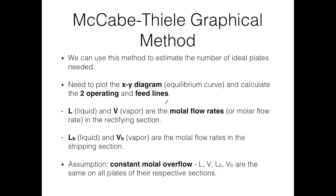A very popular method to determine the ideal or theoretical number of plates in a distillation column is the McCabe-Thiele graphical method. It is graphical because we use a graph to determine the number of plates. In this method, we plot the XY diagram — the equilibrium curve — and from there we also plot the two operating lines and the feed line. To plot the equilibrium curve, we need the mole fraction in the liquid phase and the mole fraction in the gas phase at equilibrium.